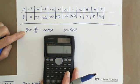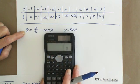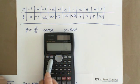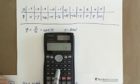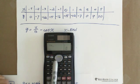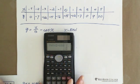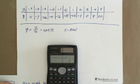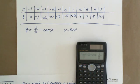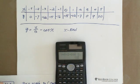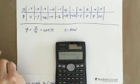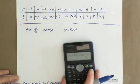Now enter the function: press ALPHA Y, then ALPHA CALC for the equal sign. Enter X using ALPHA X, divided by 2, then subtract cosine, and ALPHA X for the X inside cosine. So the full expression is Y = X/2 - cos(X).